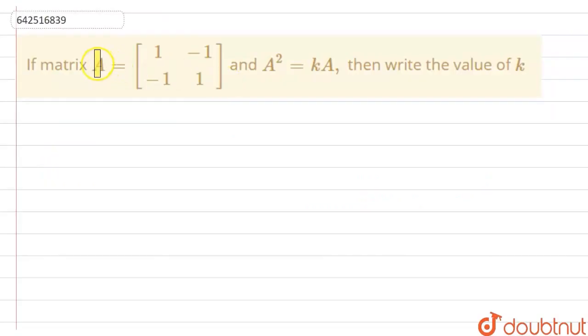Hello, welcome everyone. So in this question, A is defined as this matrix, and we have been given that A squared equals k times A. So we have to find the value of k.